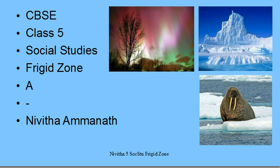The whole earth can be divided into three different zones based on temperature. The area near the equator, from the equator to the Tropic of Cancer or Tropic of Capricorn, and from there to the Arctic Circle or Antarctic Circle, and then from the Arctic or Antarctic Circle to the North Pole or South Pole. These imaginary lines, which we call latitudes or parallels, help us divide the earth into three different zones.